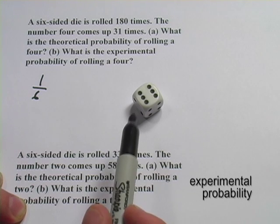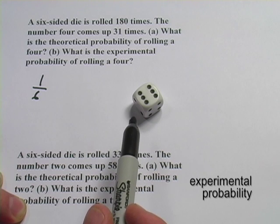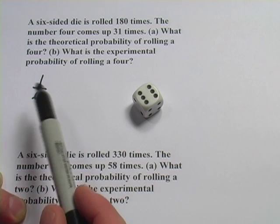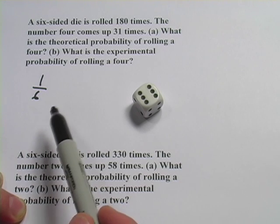Experimental probability would mean actually rolling this die over and over again and keeping track of how many times it comes up. It probably wouldn't be exactly one in six for any particular number, but the more you roll the die, the closer it would get to that.